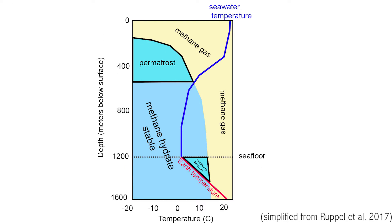In this simplified phase diagram, we can see where methane hydrate is stable. For permafrost regions, methane hydrate is stable at low temperatures and relatively low pressure. Below the seafloor, we can see methane hydrates are stable at higher temperatures and higher pressures than the permafrost.